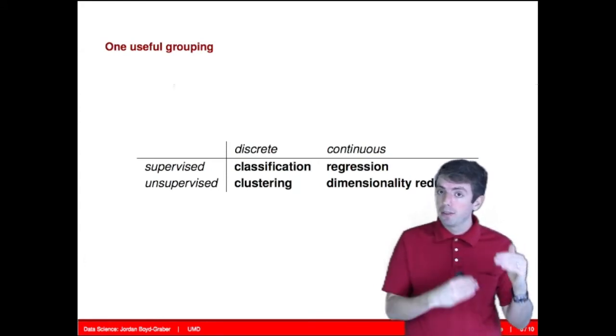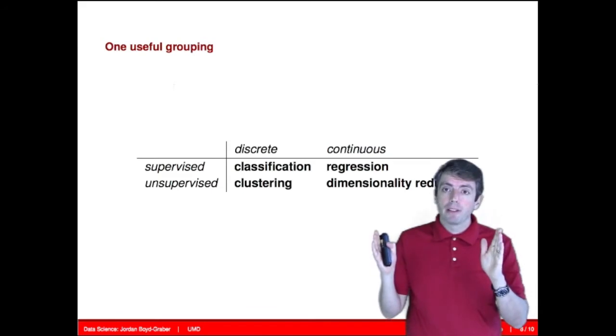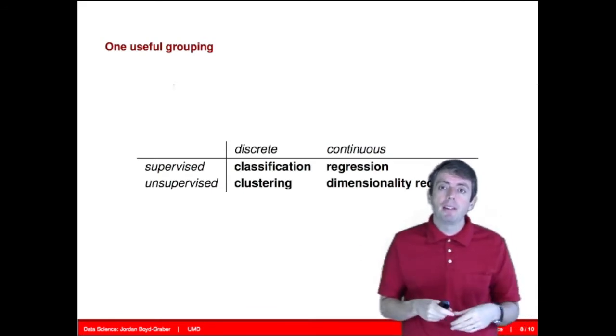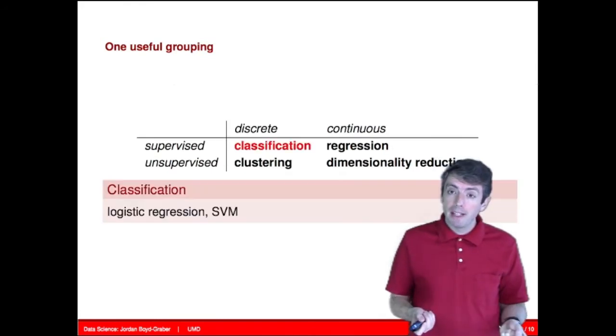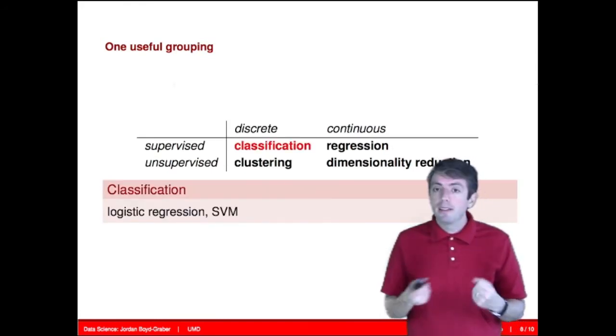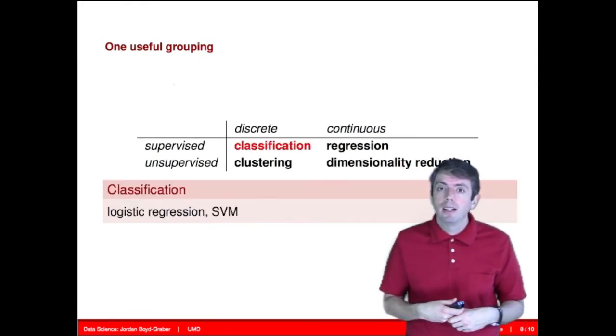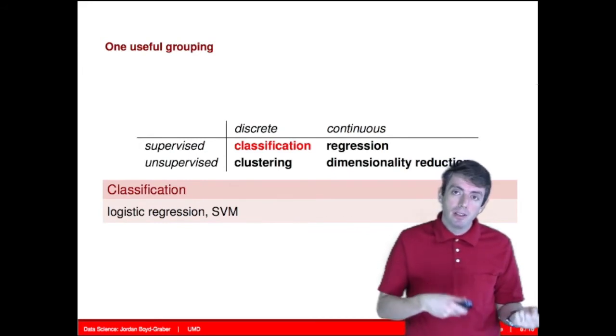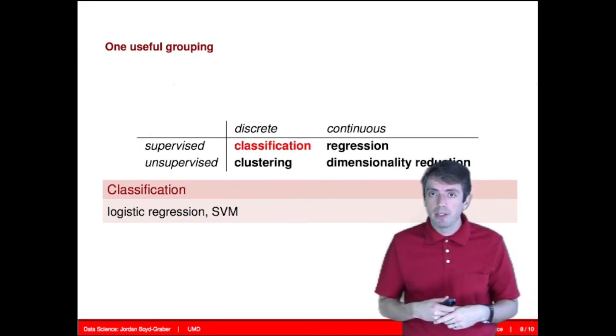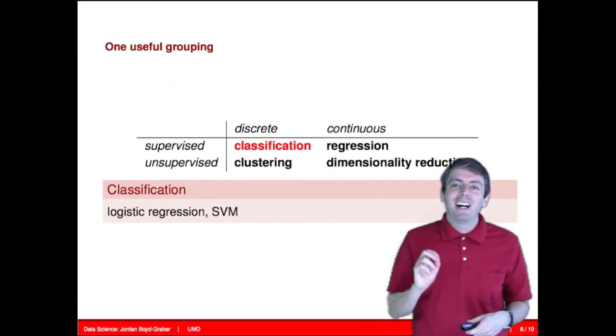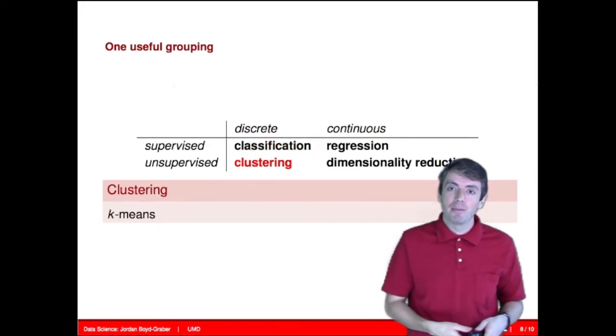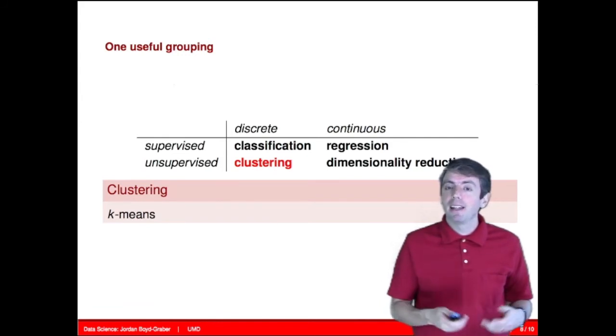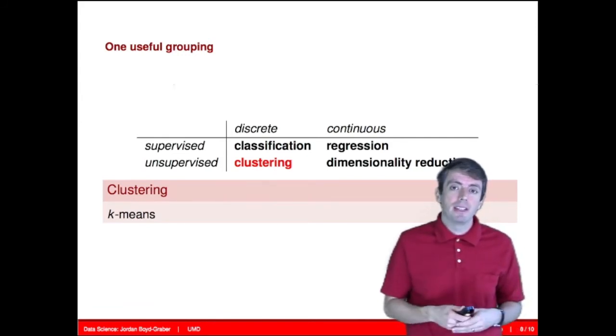So now that we have these two axes of how we can divide data science algorithms, whether they're operating on discrete versus continuous data, or whether they're supervised or unsupervised, we now have a variety of problems. If you're applying supervised algorithms to discrete data, this is called classification. And we'll look at algorithms like logistic regression and support vector machines. If you apply unsupervised algorithms to discrete data, this is called clustering. And we'll look at algorithms like k-means and latent Dirichlet allocation for solving these problems.